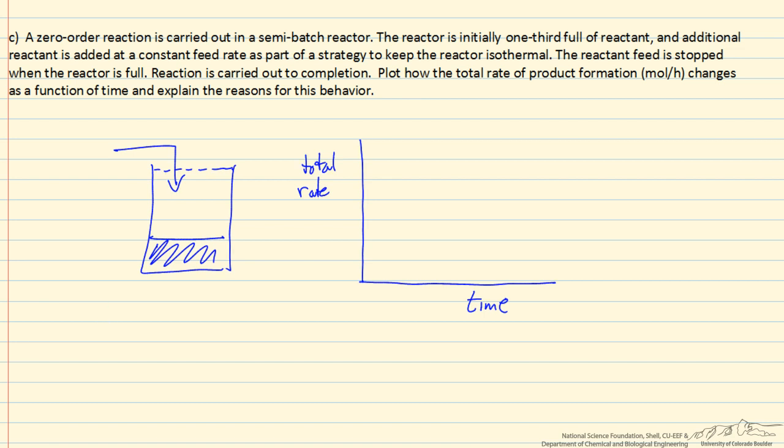For a zero-order reaction, the rate that B forms is the rate constant times the volume in the reactor. It doesn't depend on concentration. It depends on how much we have available to react, since the rate constant is per volume. So initially that means we have some rate.